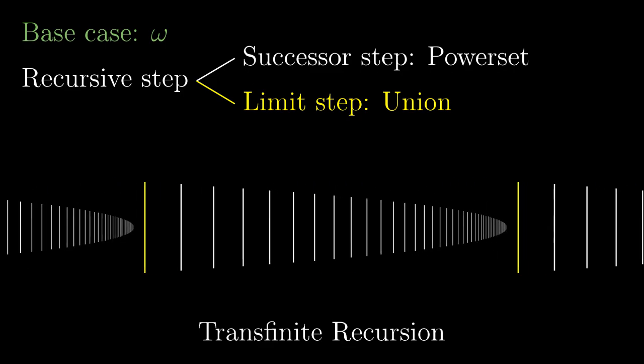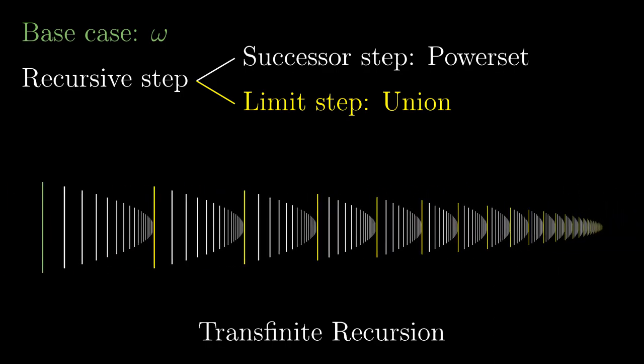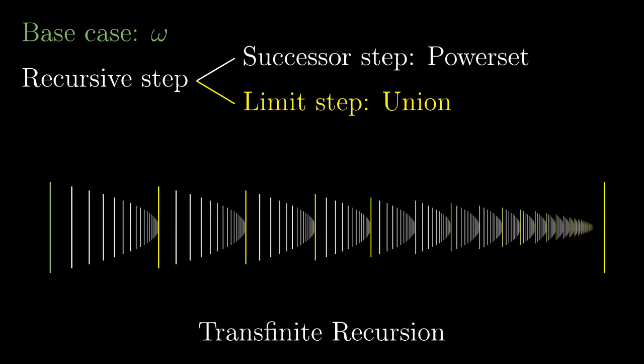On one hand, whenever we begin to see a pattern in the transfinite recursion, we can take the limit step and overcome it. On the other hand, transfinite recursion doesn't work on everything, it fails for example on positive real numbers.